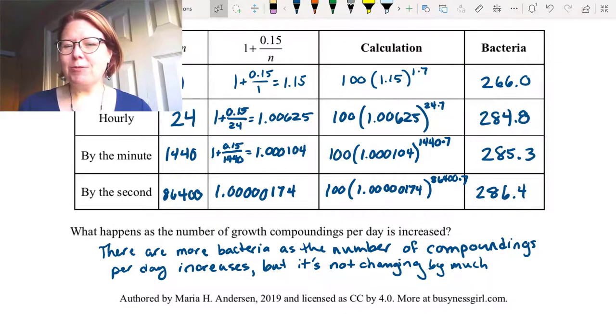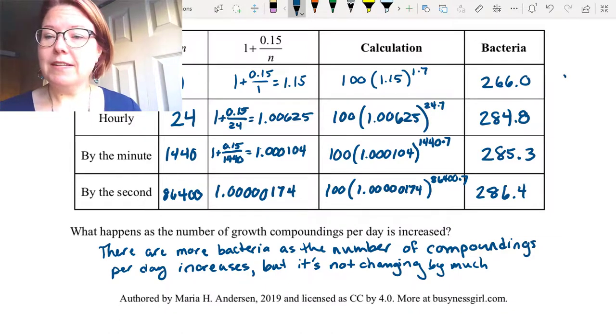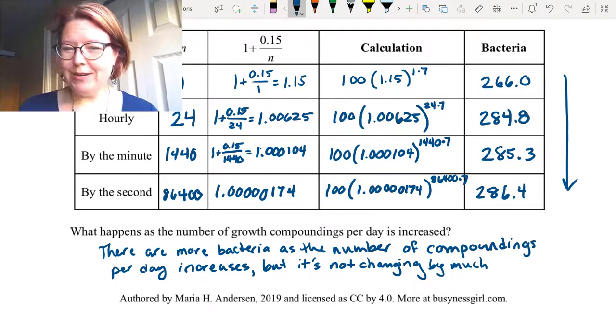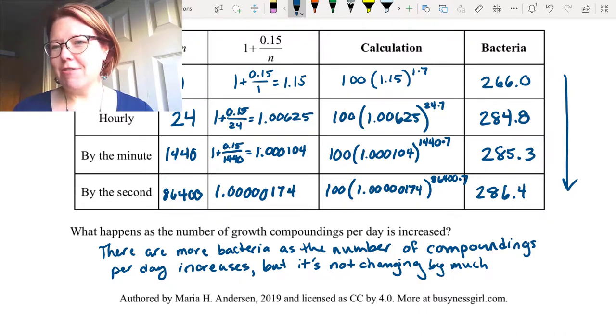So what happens as the number of growth compoundings per day is increased? Well, there are more bacteria as the number of compoundings per day increases, but it's not changing by much as we get to the higher and higher compounding numbers.